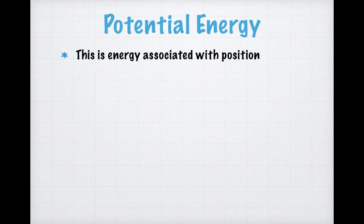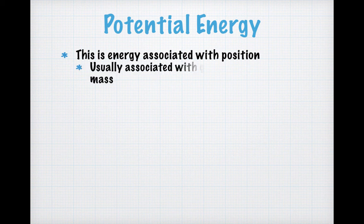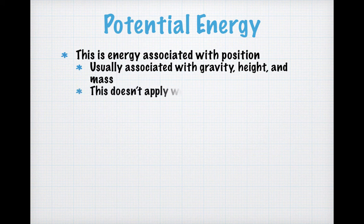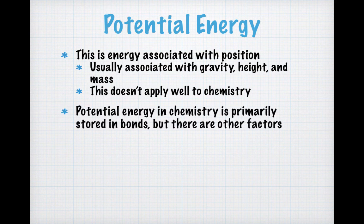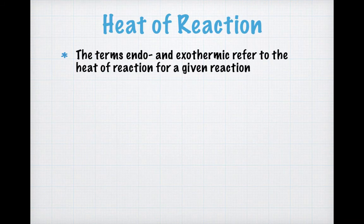Potential energy is energy associated with position in physics, which becomes associated with gravity, height, and mass — but this description doesn't apply well to chemistry. In chemistry, potential energy is primarily stored in bonds: the energy required to break bonds or released when bonds form. When energy is absorbed or released in a reaction, we have the heat of reaction, and this is where we introduce the terms endothermic and exothermic. Exothermic means heat is going out; endothermic means heat is going in.